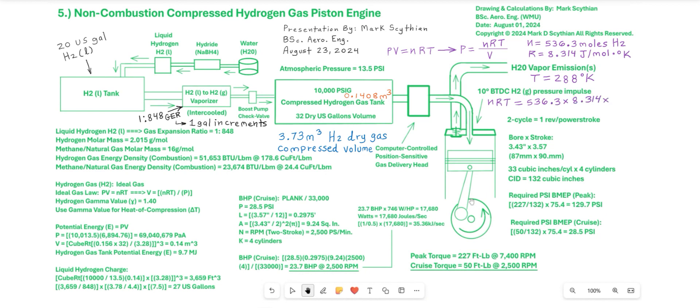So if we multiply these three values NRT and then divide it into the fixed volume of the tank, we calculate 9.12 megapascals of gauge pressure. So this is equal to 1323 pounds per square inch gauge pressure. So that's what's in the tank from one gallon of liquid hydrogen vaporized into gas, into gaseous hydrogen.